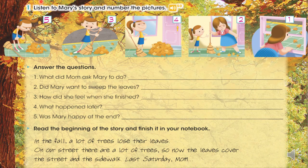Ok, en la breve historia, la mamá observa su patio lleno de hojas. Le dice a Mary que tiene que barrer las hojas. Ella empieza a barrer, luego termina de juntar las hojas y pasa un viento, una brisa que termina regando todas las hojas. Ok?